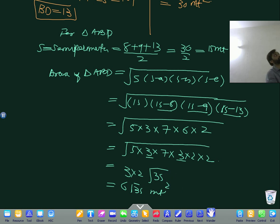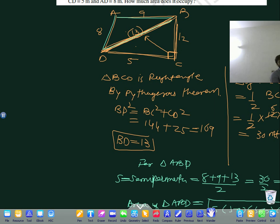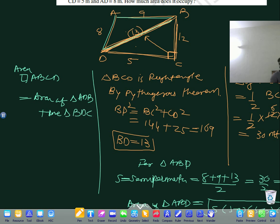So area of quadrilateral ABCD equals area of triangle ADB plus area of triangle BCD. What is the area of those triangles? 30 plus 6 root 35 meter square. This is your answer.